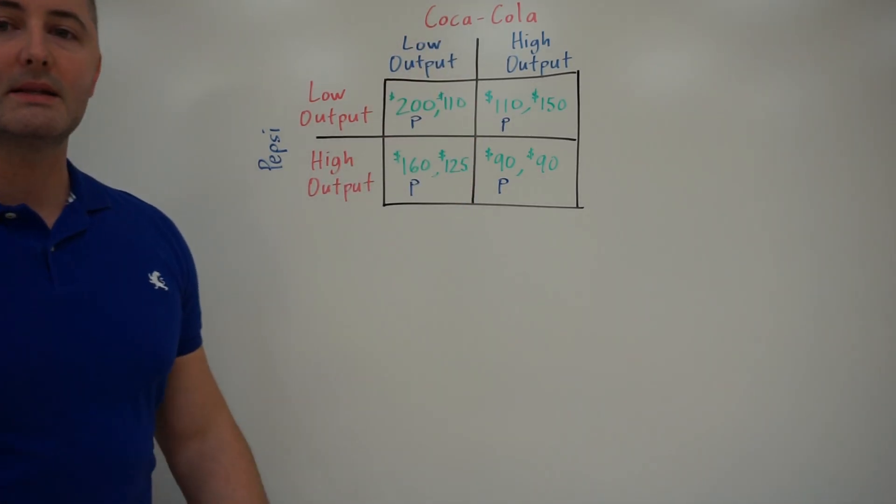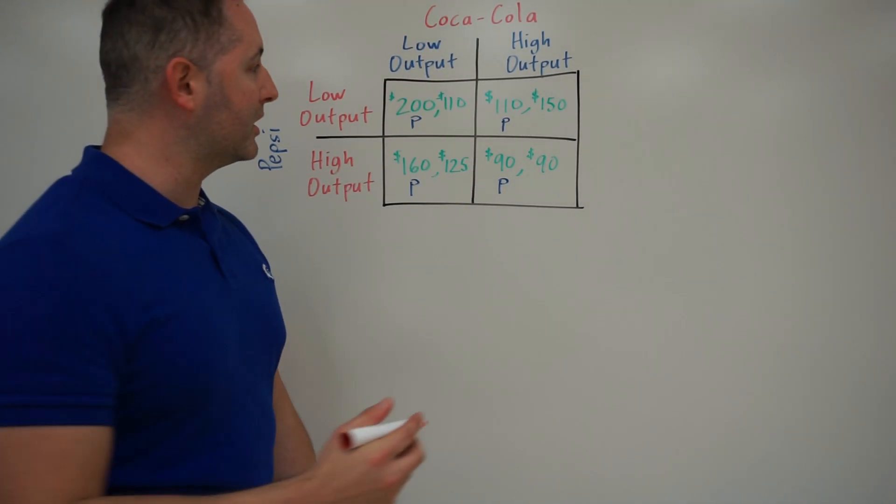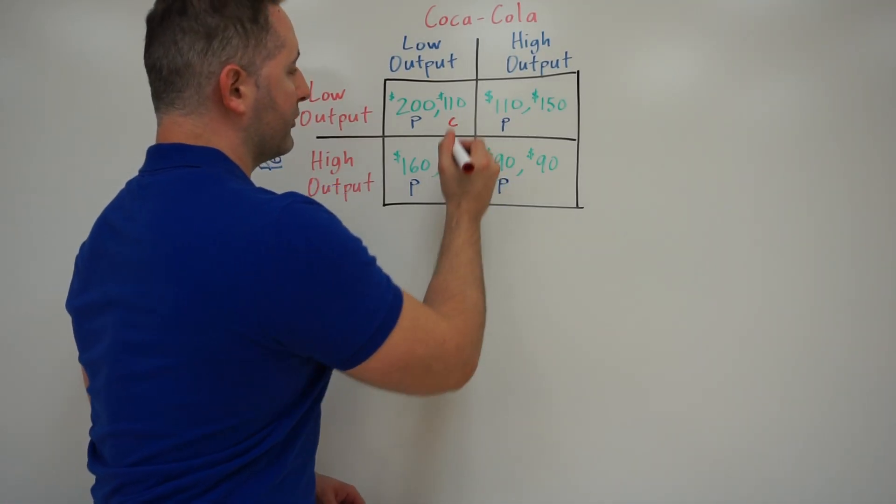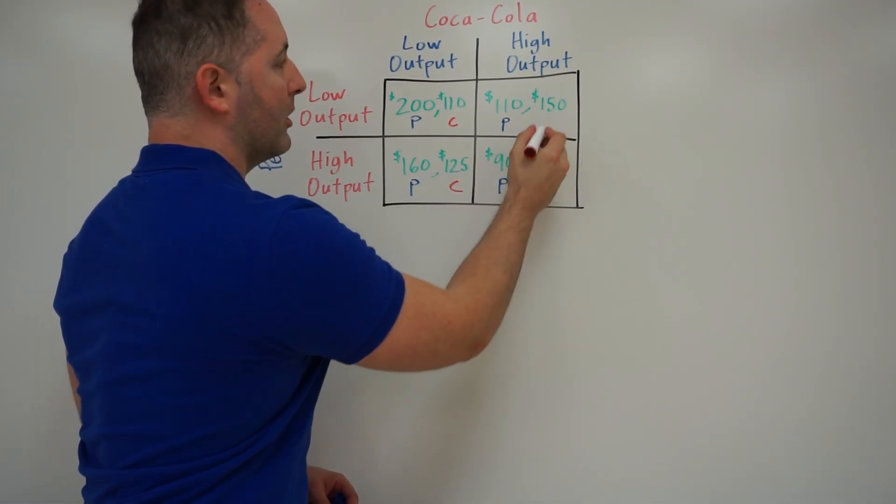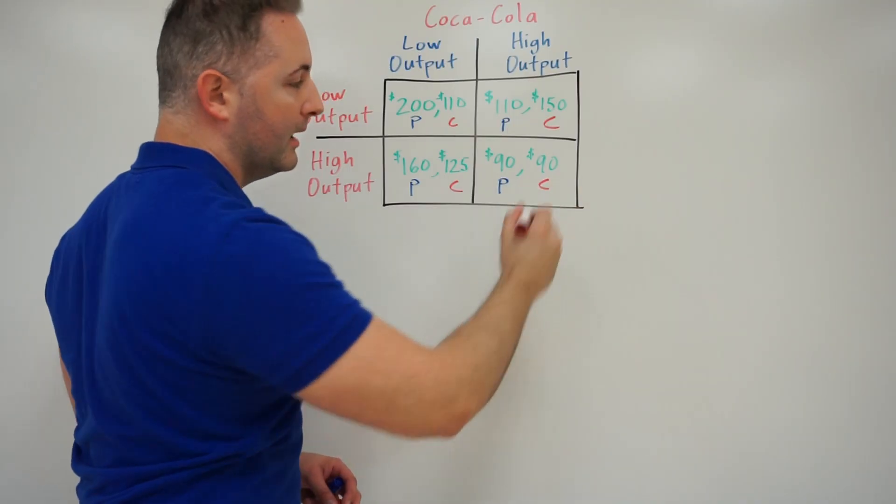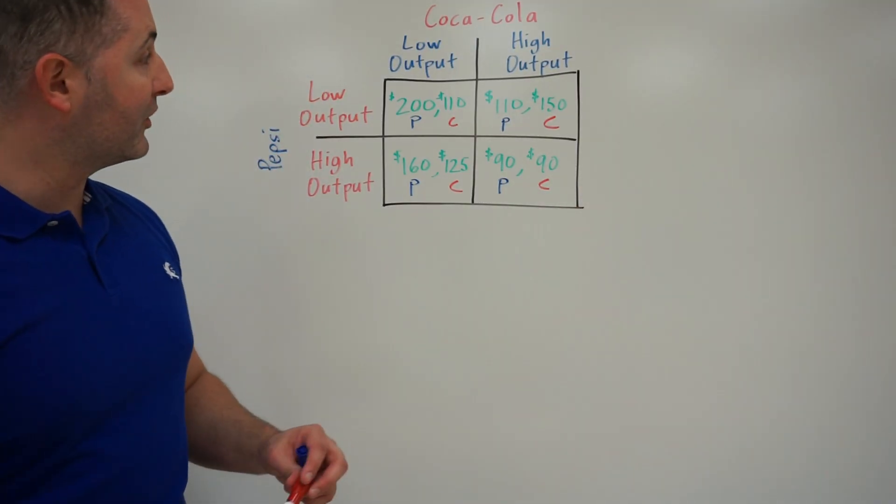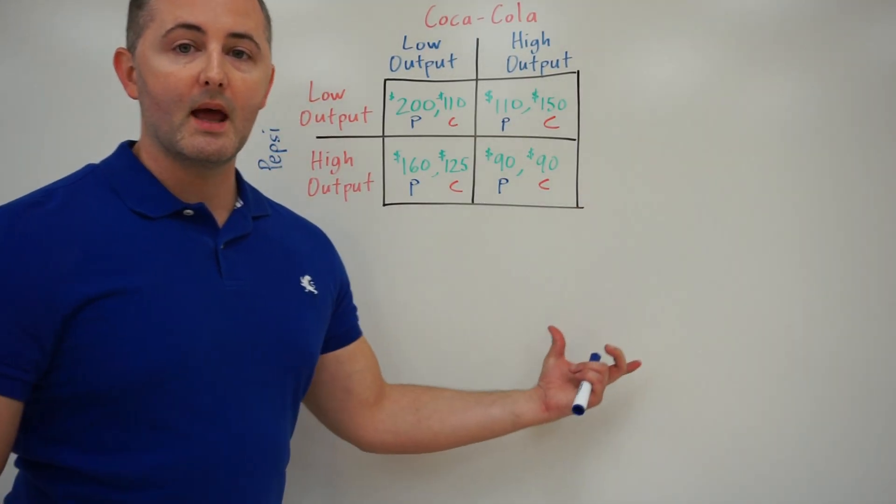Coca-Cola, since that's our vertical axis, that's always going to be the second number here. So again, it's pretty simple. We walk through it, we have our Coke on the right, Coke on the right, Coke on the right, and Coke, you guessed it, on the right hand side.